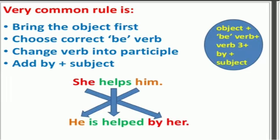These are some basic and common rules for forming passive sentences. First, bring the object to the front. Second, choose the correct 'be' verb. Third, change the verb into its past participle. Fourth, add the subject. Here is the formula: object plus 'be' verb plus third form of verb plus 'by' plus subject.